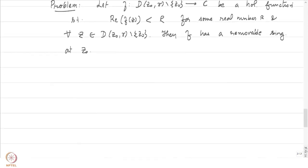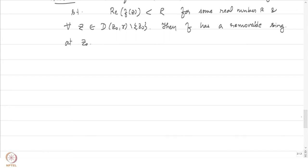The real part is bounded above on the punctured disk. If this happens, then f has a removable singularity at z₀. The condition is that the real part of f(z) is bounded on D(z₀, r) minus {z₀}. The function f can either have a removable singularity, a pole, or an essential singularity. We will show that f cannot have a pole and cannot have an essential singularity, coming to a contradiction in either case.